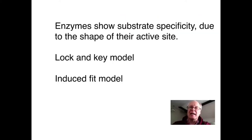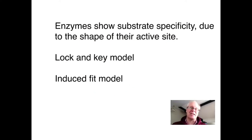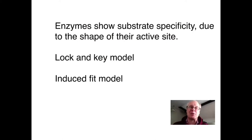To summarize: enzymes show substrate specificity and this substrate specificity is due to the shape of their active site. The lock and key model has the active site more or less static and rigid — it explains how certain substrates bind to the active site. The induced fit model, illustrated with the banana and the grape, explains how different substrates can bind: as soon as the substrate comes near, the active site adopts the right shape to accommodate it. But if the substrate is too different, the active site cannot deal with it. I hope this makes sense, and thank you for watching.